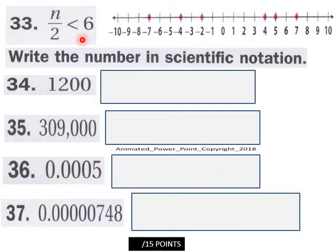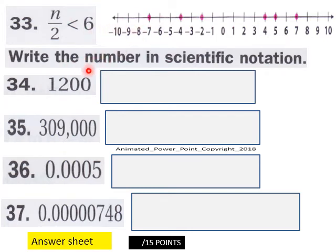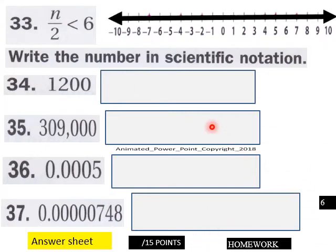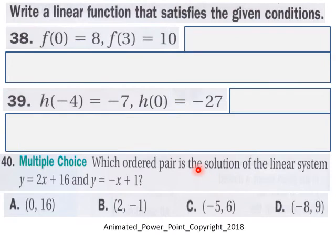Page 6, continue up here with 33. Solve and graph. And then here write these in scientific notation here in these boxes there. 15 points page 6, and then there's your arrow.